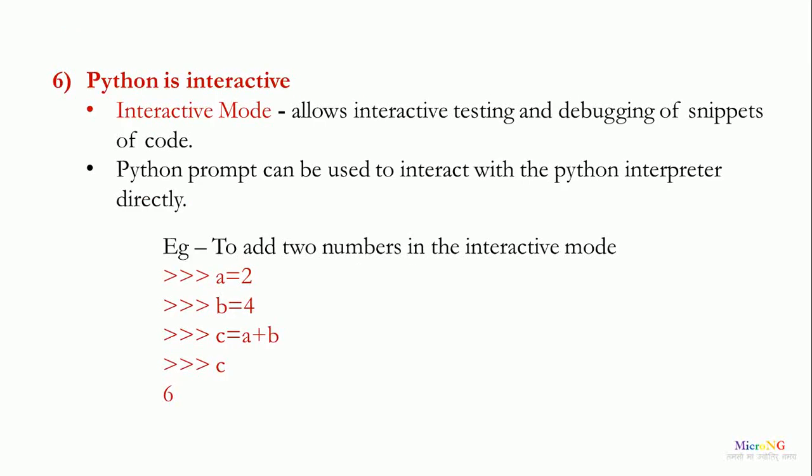Sixth point, Python is interactive. Interactive mode allows interactive testing and debugging of code snippet in Python. Python prompt can be used to interact with the Python interpreter directly. For example, to add two numbers in interactive mode, first we have typed the value of a as 2, next b as 4 and we have written the statement c equal to a plus b and when we type the variable c, it prints the result of c. So, small code snippet can be executed and tested by using the interactive mode of Python which is the Python prompt.